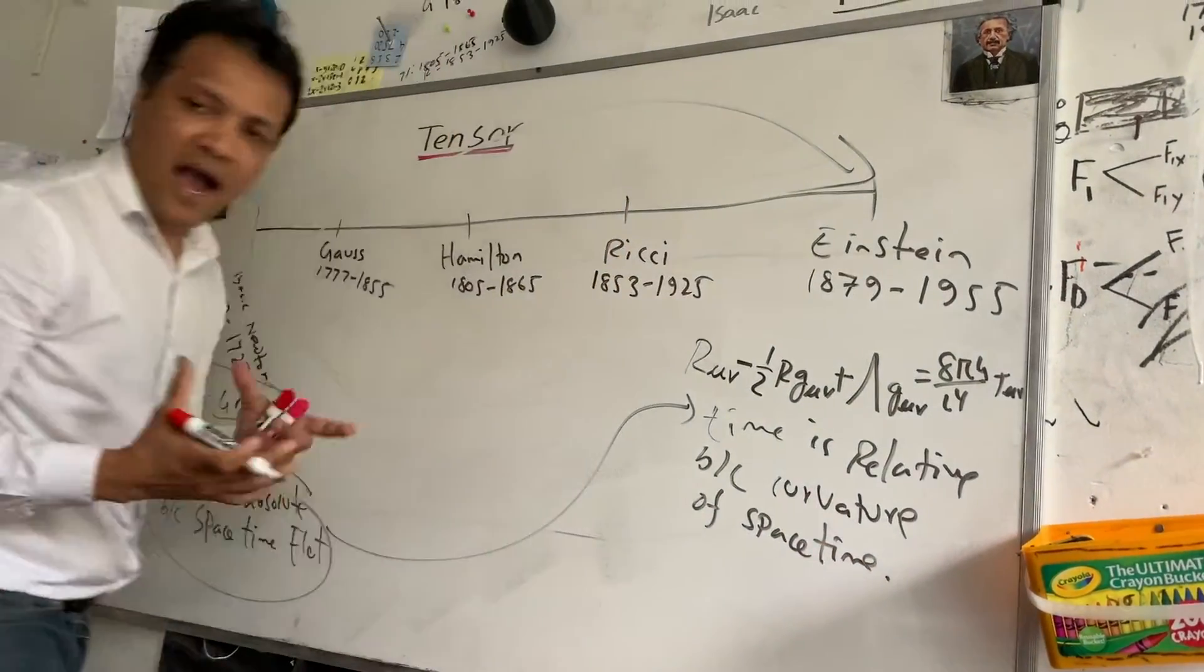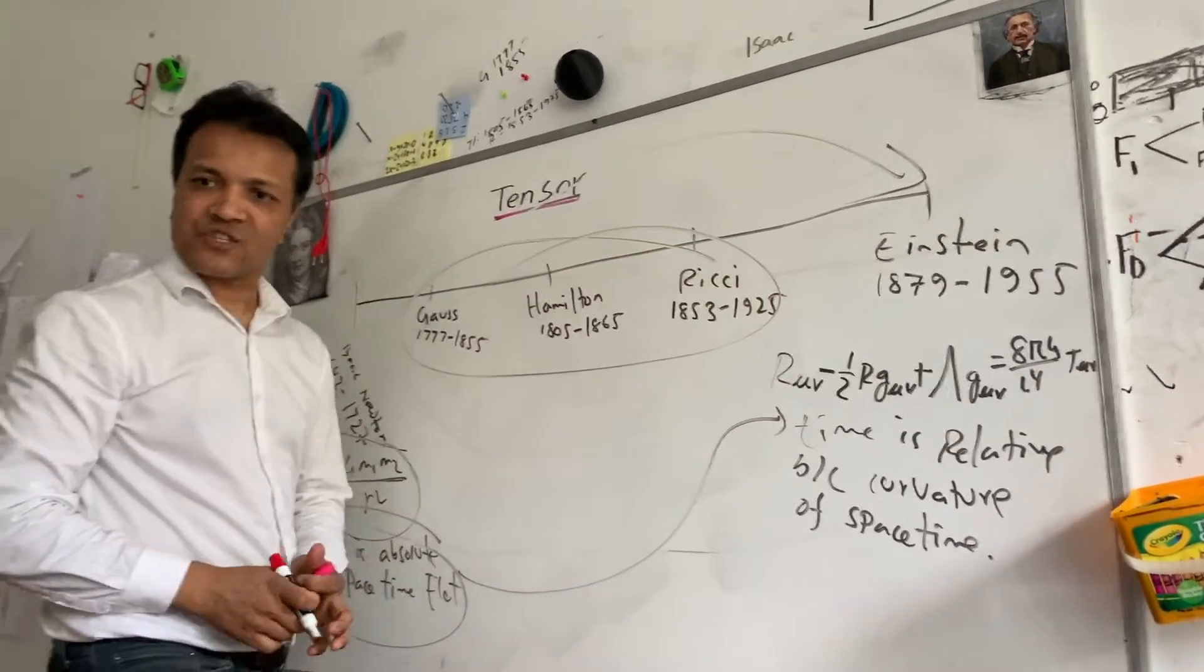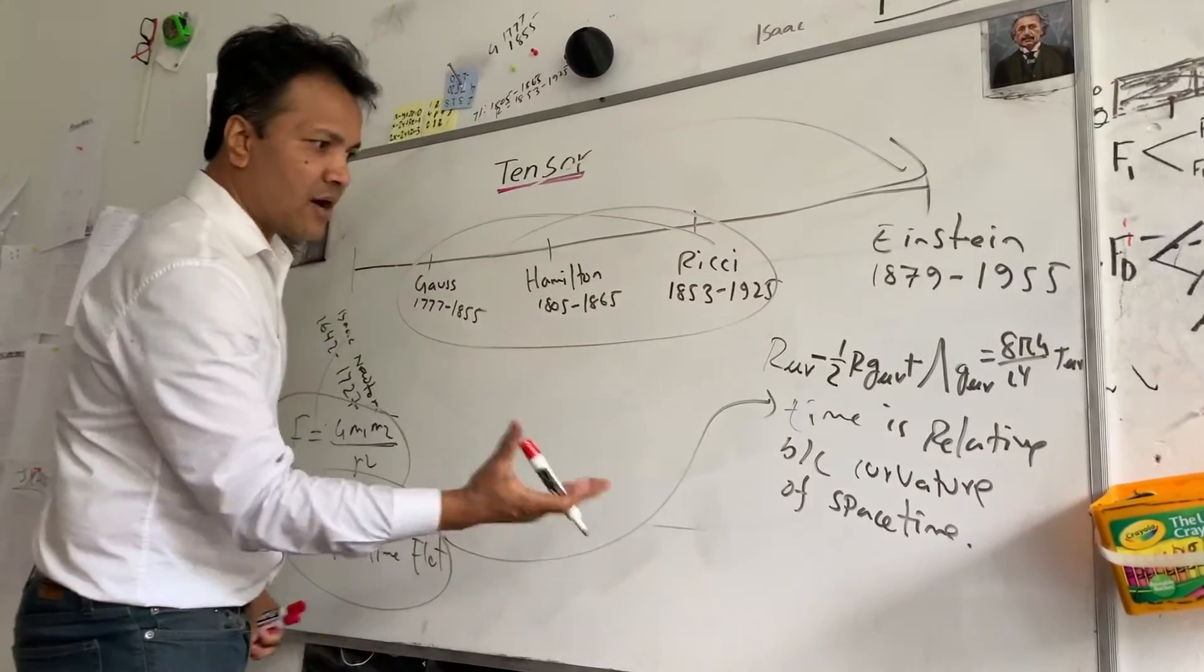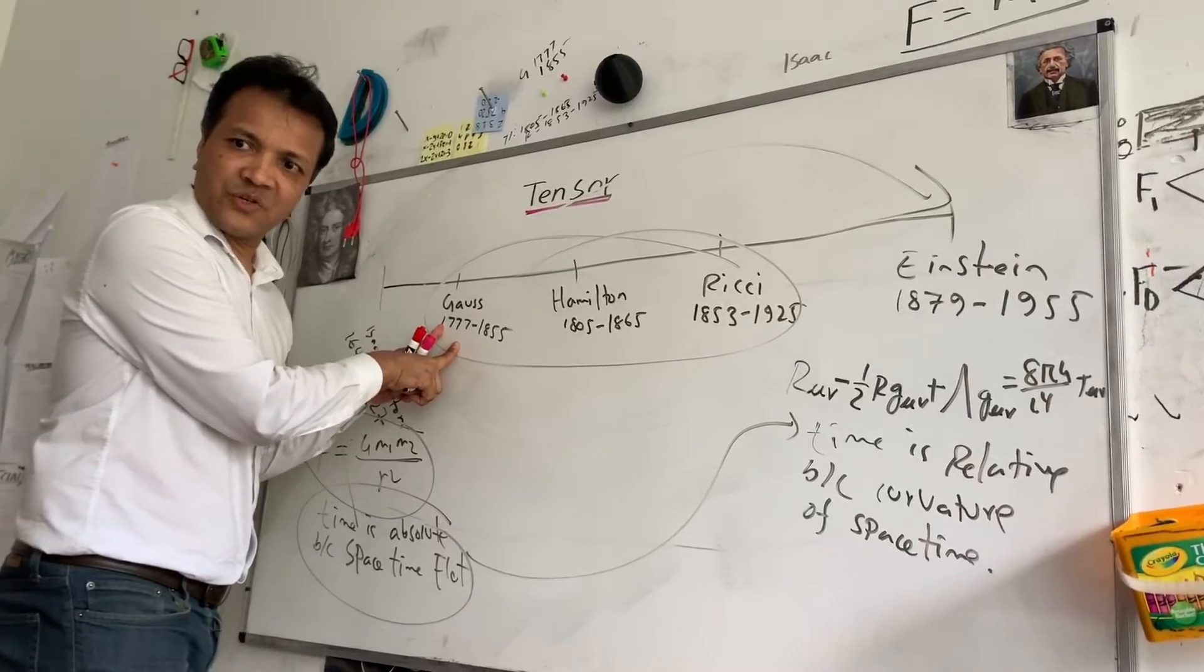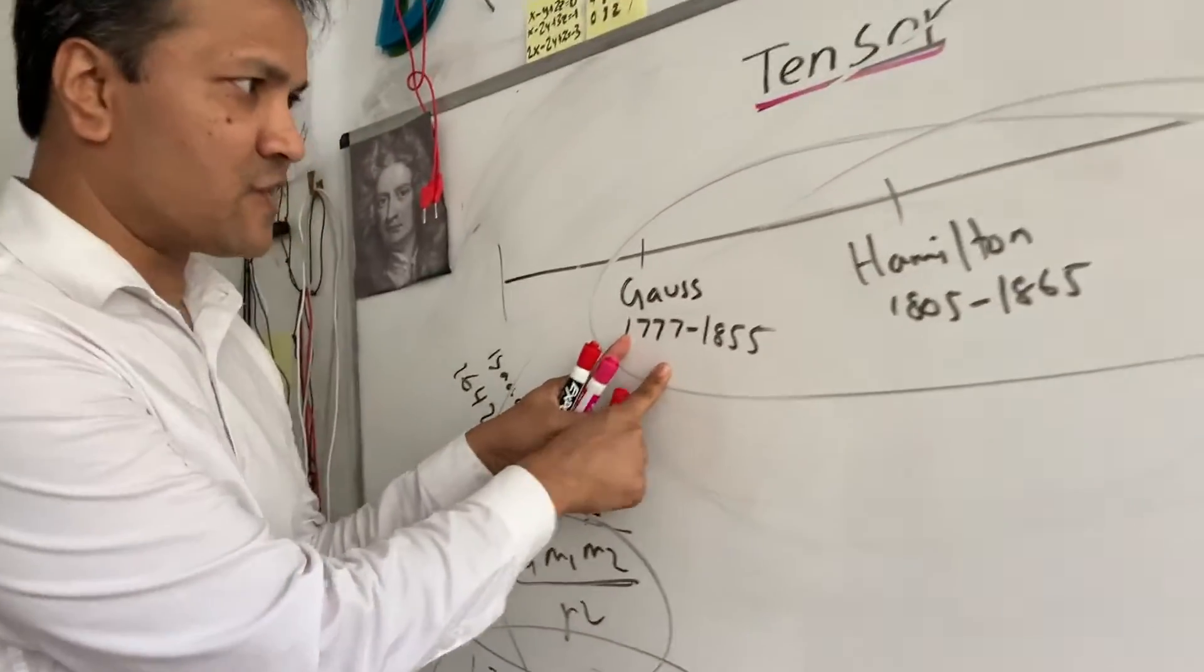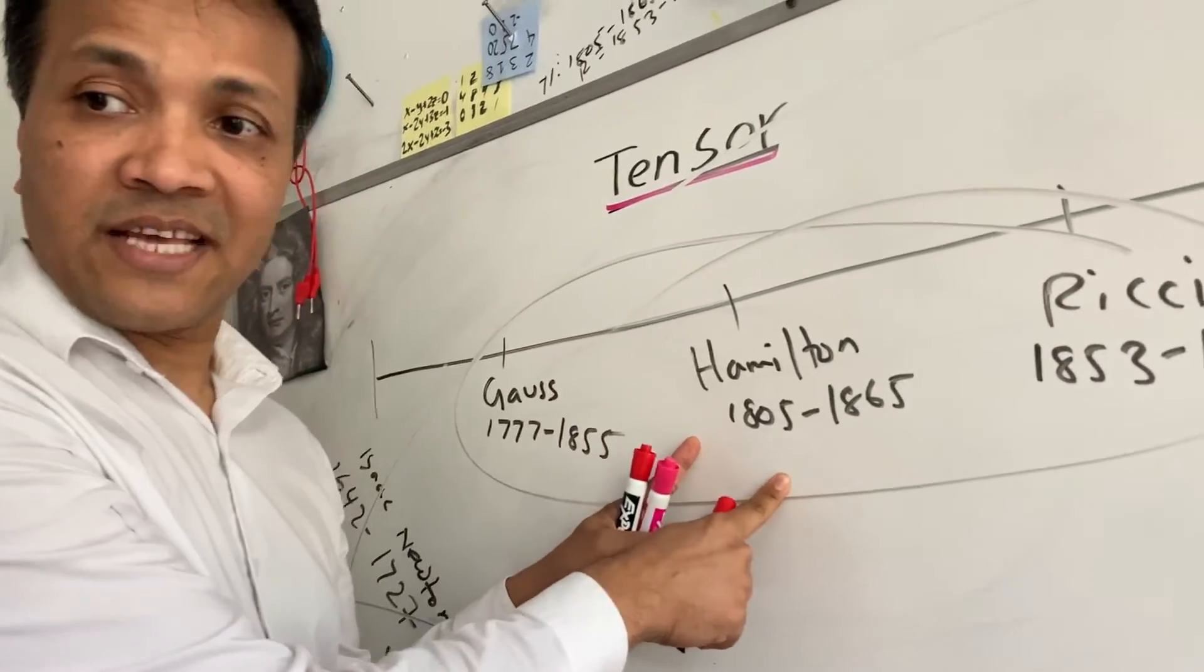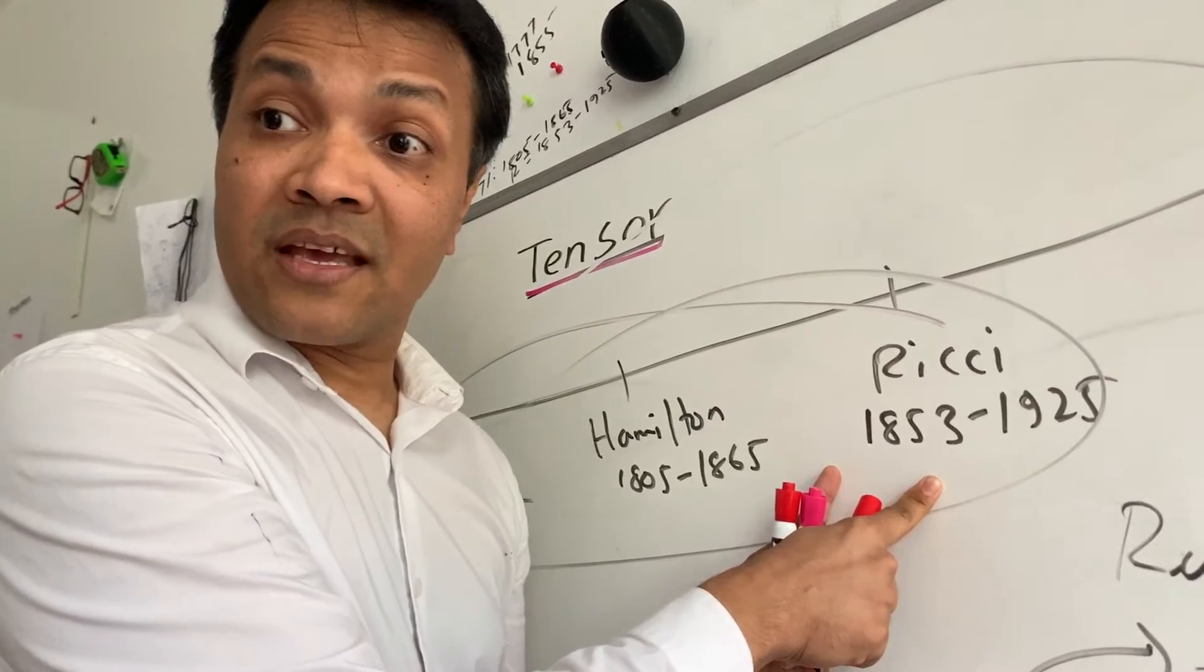So how did he do that? He used the mathematics created by Gauss, Hamilton and Ritchie. How did he use it? Gauss first uses the notion of tensor in differential calculus. Hamilton created the word tensor and found the application of tensor and Ritchie created tensor calculus.